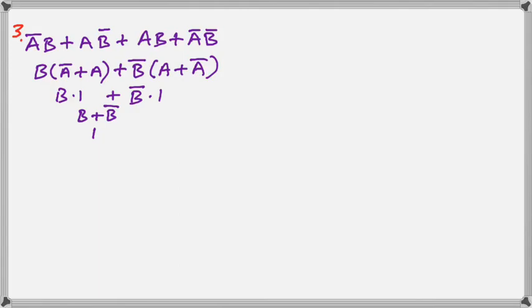We see that we can extract the B from the first and third term, and we can extract the B bar from the second and third term using the distributive rule. Of course we are back to our familiar A or A bar equals one.